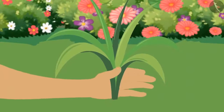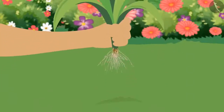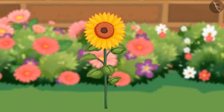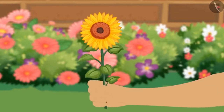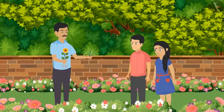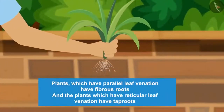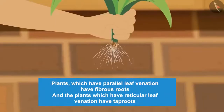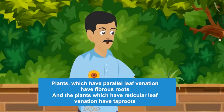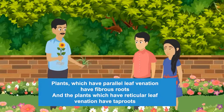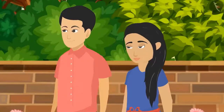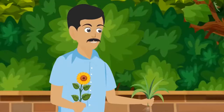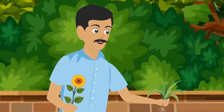Sundar uncle uproots a grass plant and a plant with reticular leaf venation carefully with their roots. He shows the children that grass plants with parallel leaf venation have fibrous roots, while plants with reticular leaf venation have tap roots. The children find this a very good piece of information.